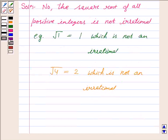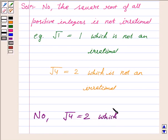So, hence, the answer is no. Because root of 4 is 2, which is not irrational. That is, it is rational.